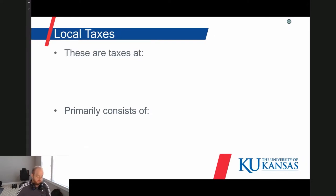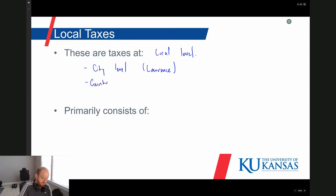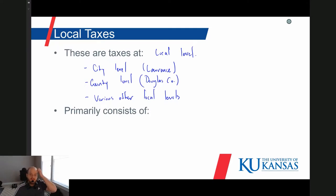The first taxes we'll talk about are local taxes. As the name implies, local taxes are taxes at the local level — city level, like the city of Lawrence, or county level, or various other local levels. The city of Lawrence has taxing authority, Douglas County has taxing authority, and for some states there are school district taxes or other local district taxes. The most common are city level and county level taxes.